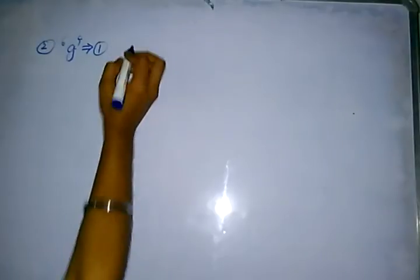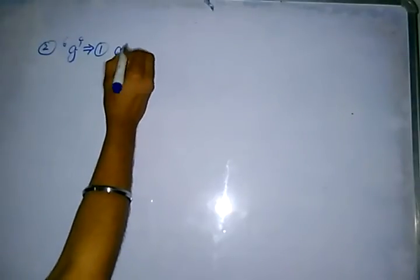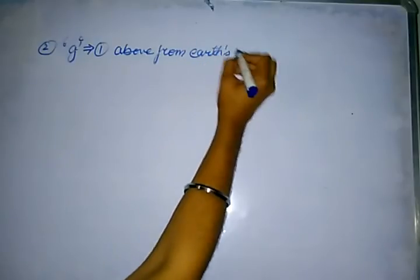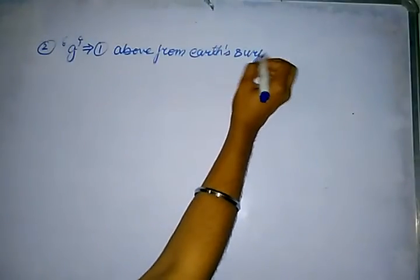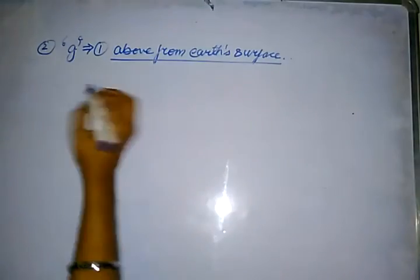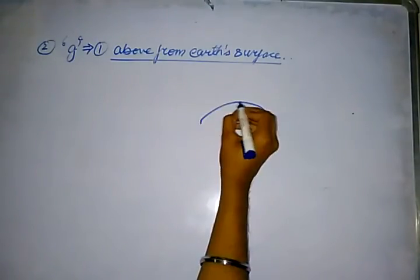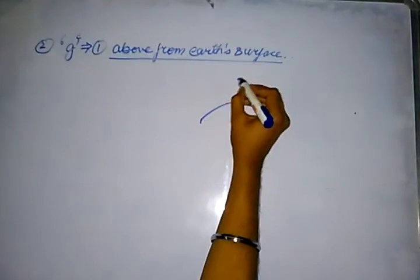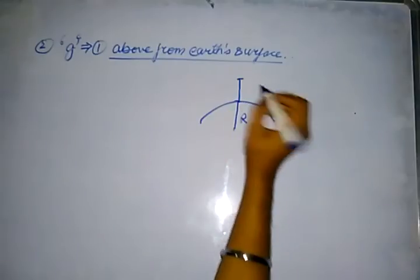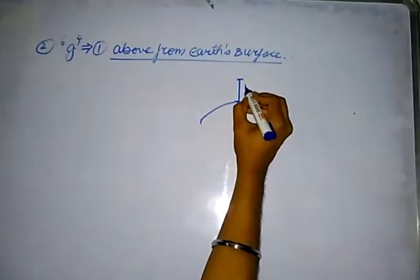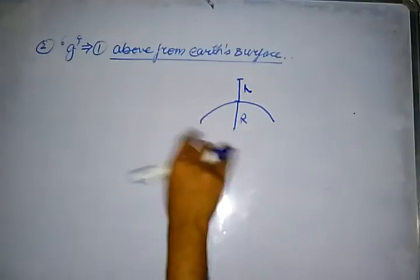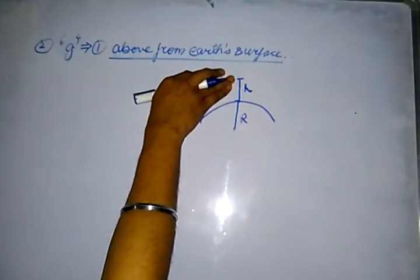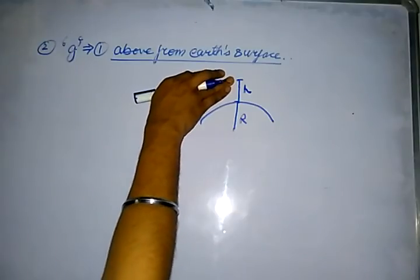First case: if we go above from the surface — this is our Earth's surface and this is the radius of the Earth. If we go a little bit up, let the distance be h. So what force will be here? First, we need to find g prime, that is the gravitational acceleration at that height.